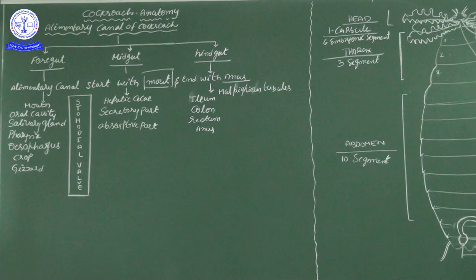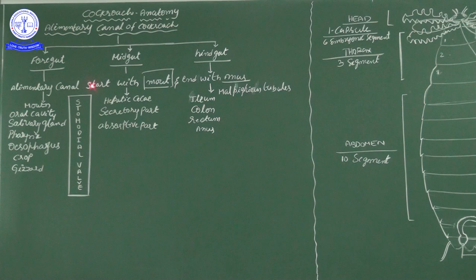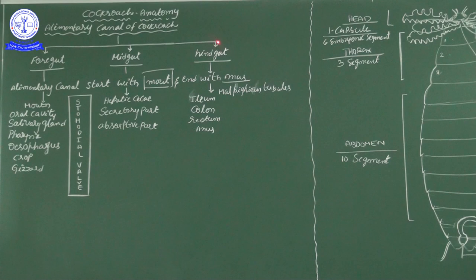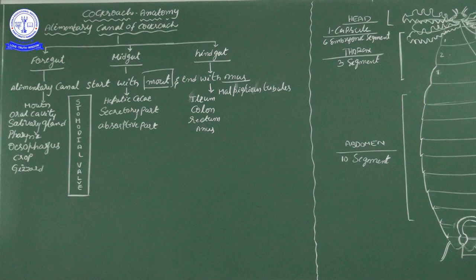Cockroach anatomy: the alimentary canal of the cockroach — also called the gut — consists of three distinct regions: foregut, midgut, and hindgut. The alimentary canal is also called 'gastro'; that is why any stomach or intestinal problem is called a gastric problem. Gastro means stomach, and it is a nickname for the gut and alimentary canal.